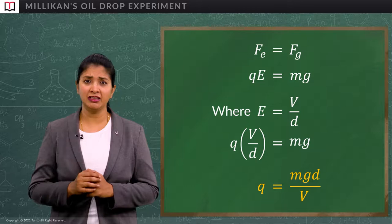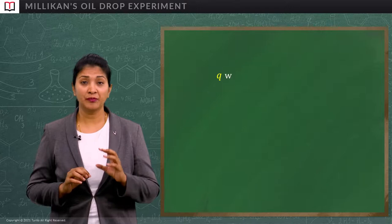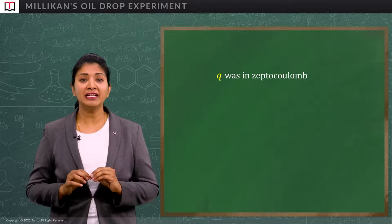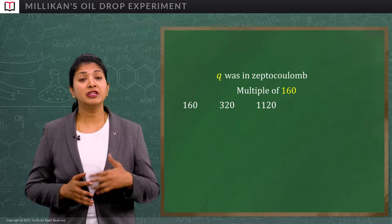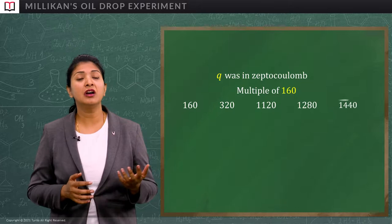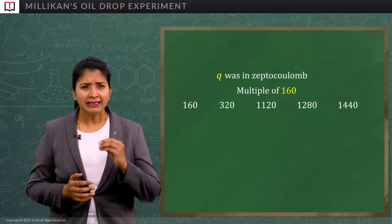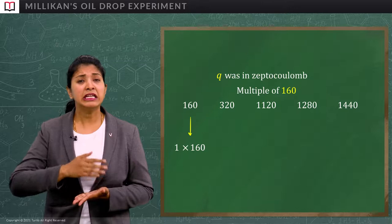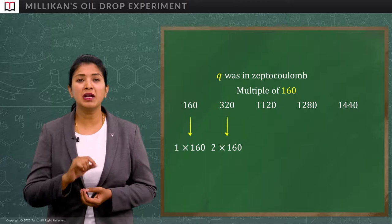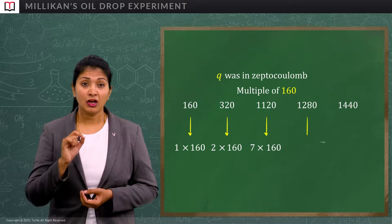So, the charge applied Q was in zeptocoulomb and was found that it was always a multiple of 160. Say for example, 160, 320, 1120, 1280, 1440 and likewise. So, these values were actually the multiple of 160. 160 can be written as 1 into 160, 320 can be written as 2 into 160, 1120 is 7 into 160, 1440 is 9 into 160.